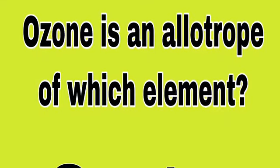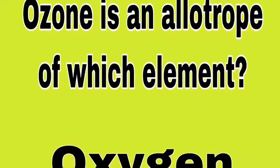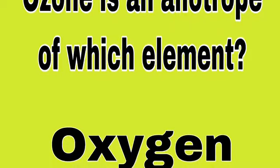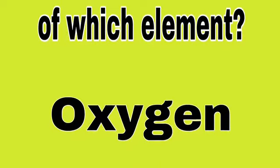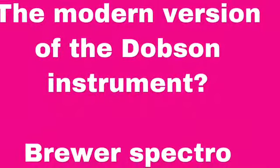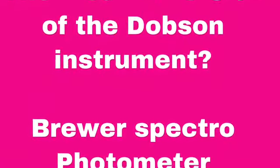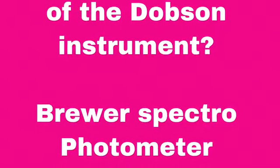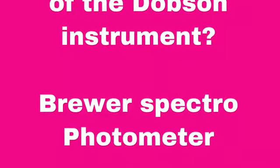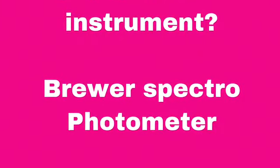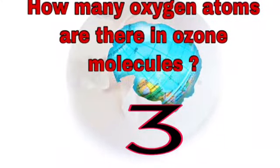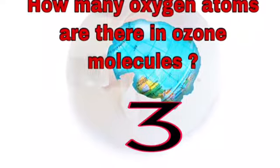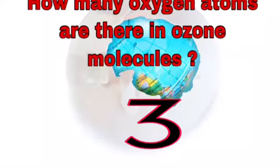Ozone is an allotrope of which element? Answer: Oxygen. What is the modern version of the Dobson instrument? Answer: The Brewer spectrophotometer.